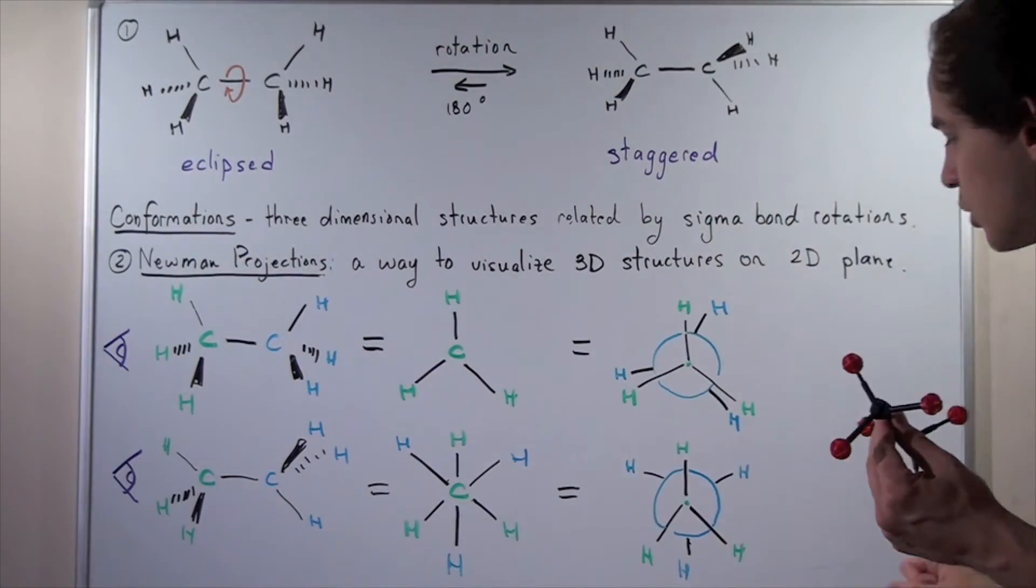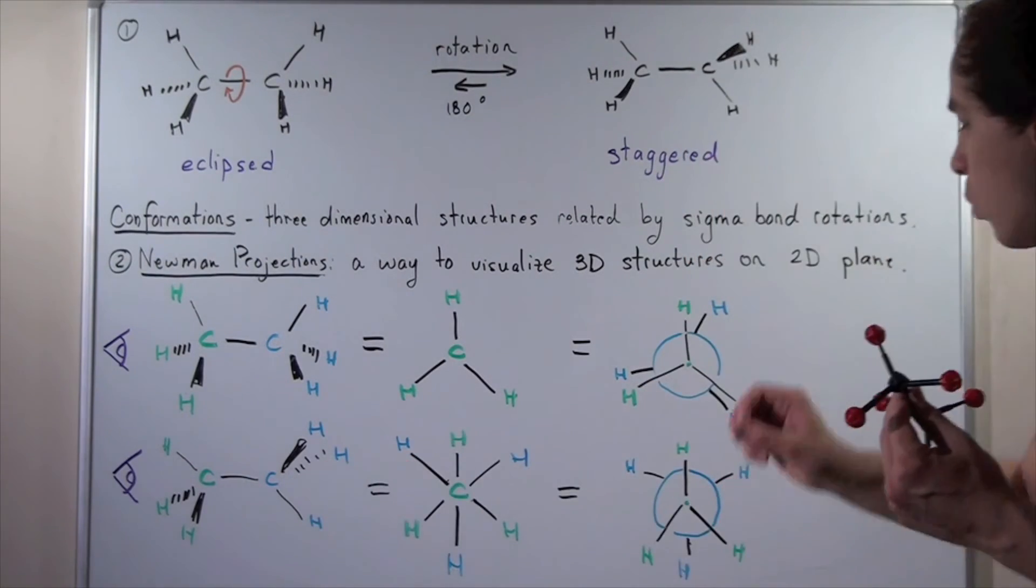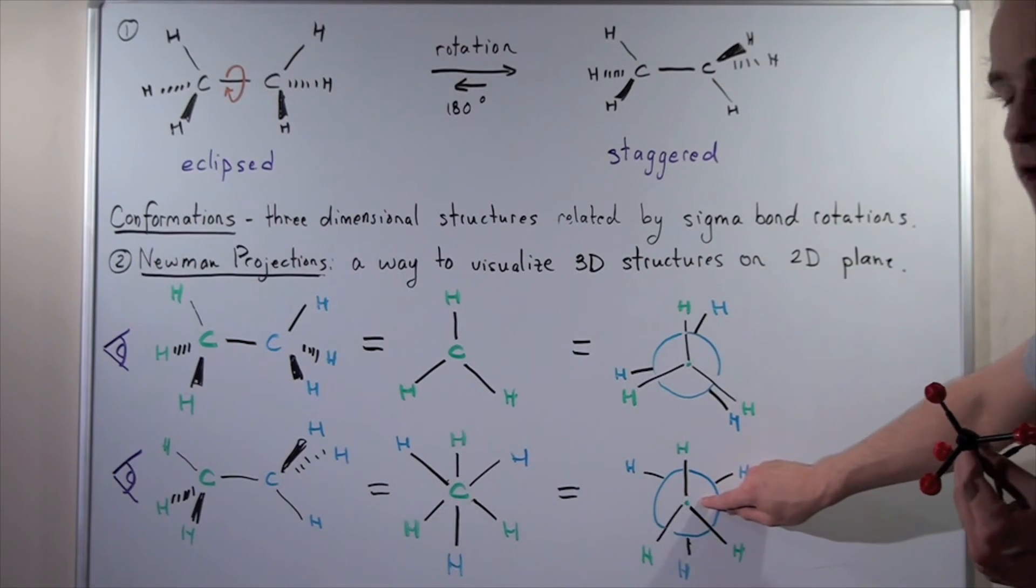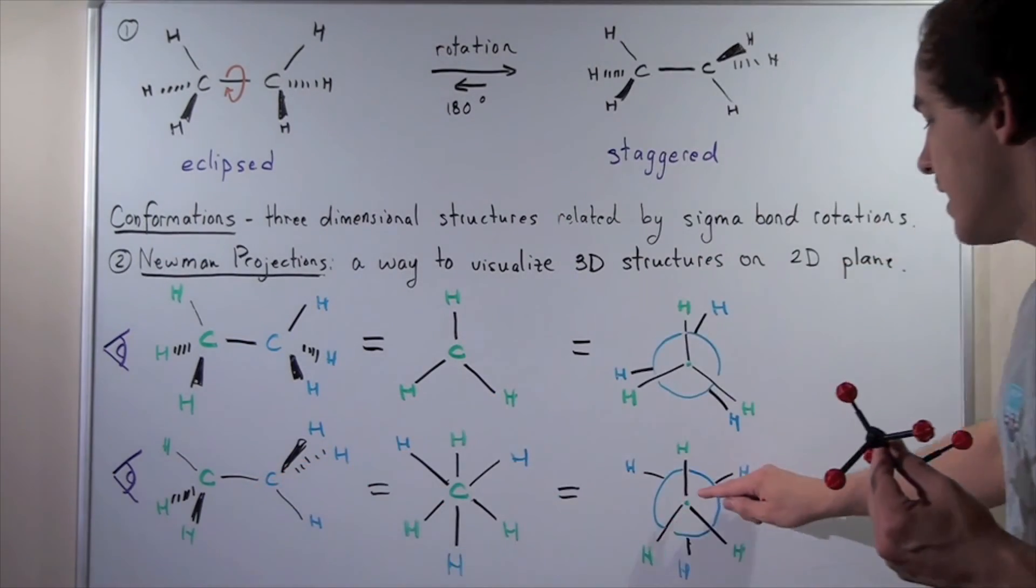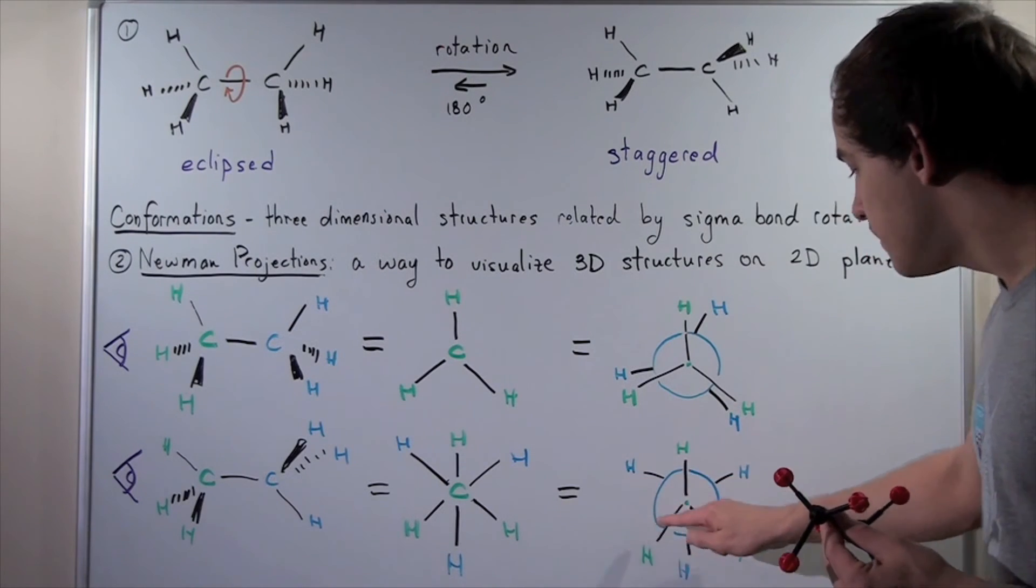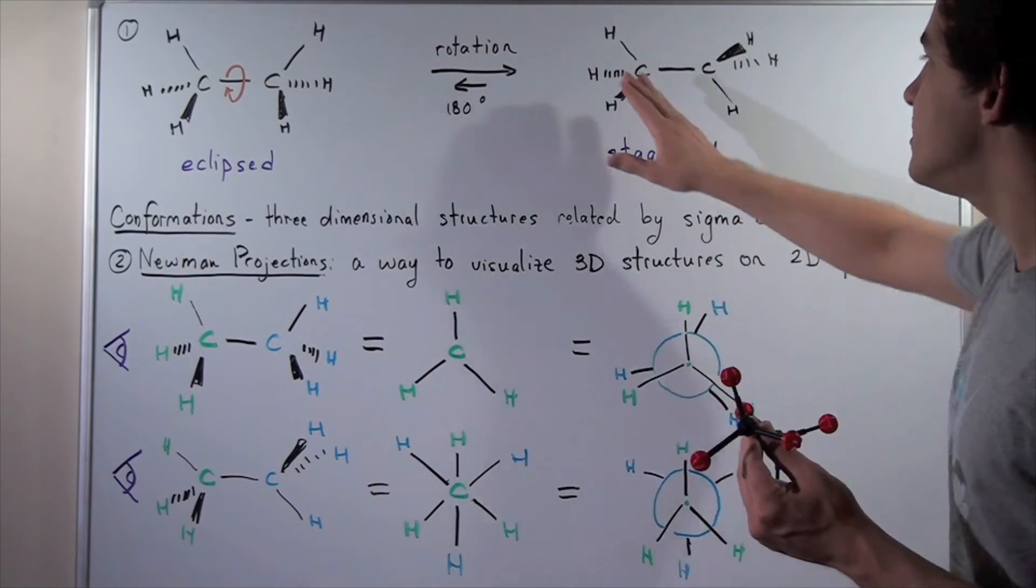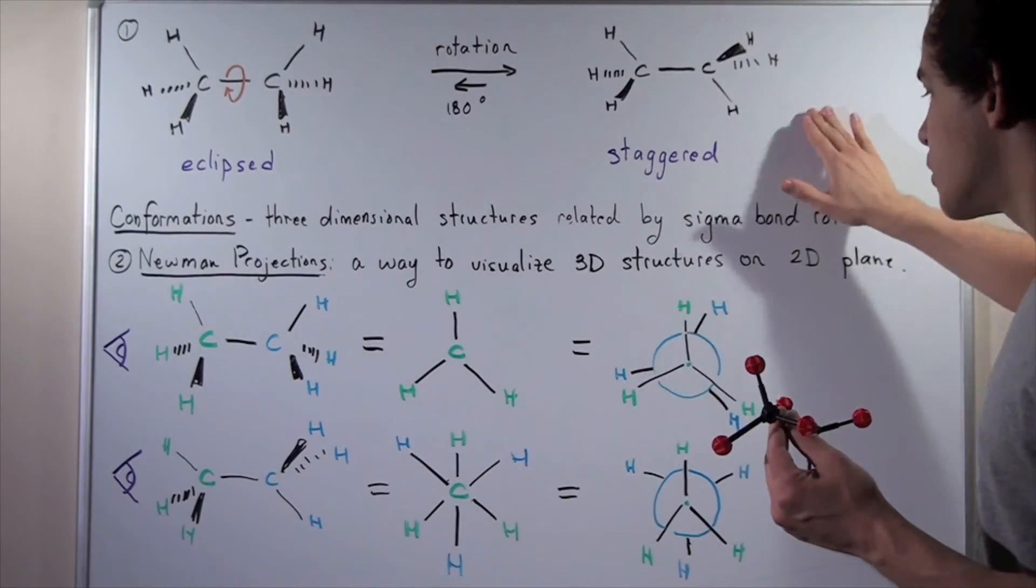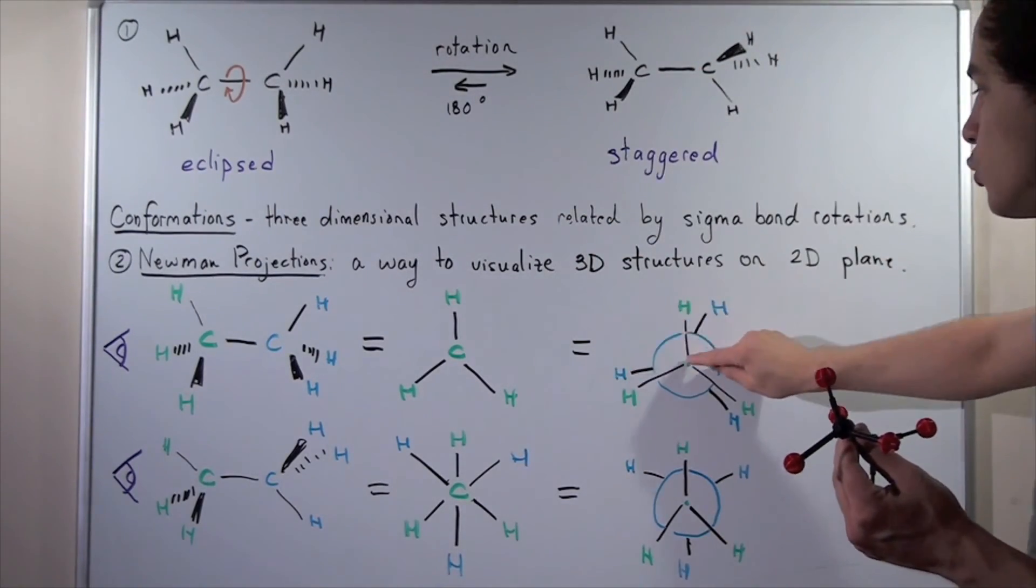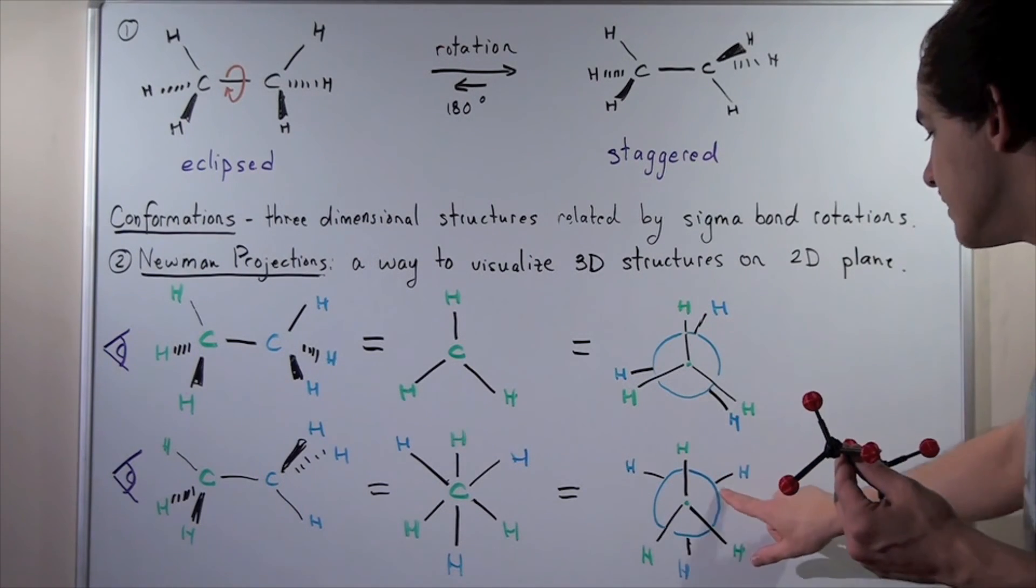In the Newman projection, we can visualize this back carbon blue atom that's given here, as well as this first carbon atom, the green one here, given by this intersection. The angle between any two bonds here is 60 degrees, as we said earlier for the staggered. So the angle here between any two C-H bonds is zero. The angle here is 60 degrees. And the angle between any two of these bonds, for example this green C-H bond and this green C-H bond, is 120 degrees.